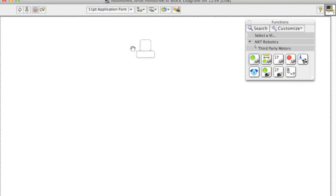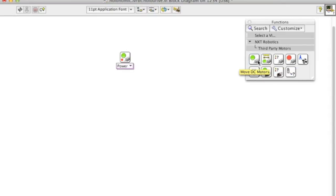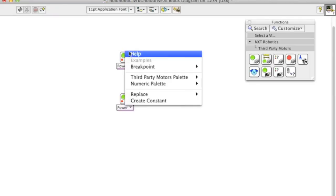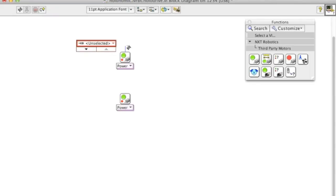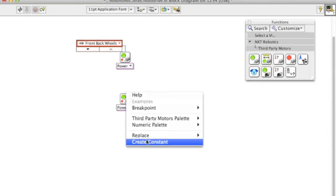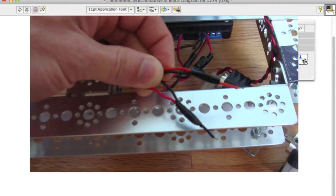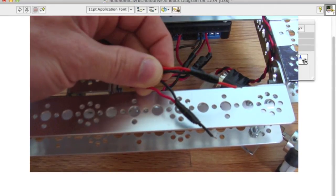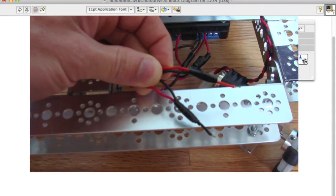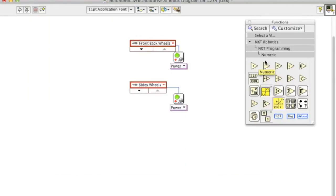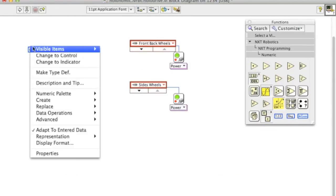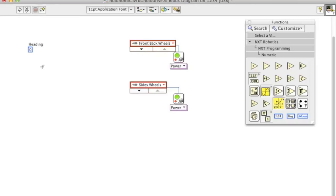So to program this in LabVIEW we get a motor for each of our pair of motors. This first one can be for my front and back wheels and this one can be for my side wheels. This also matches up with the wiring of my robot. The front and back motors are wired in parallel into the same motor controller port.